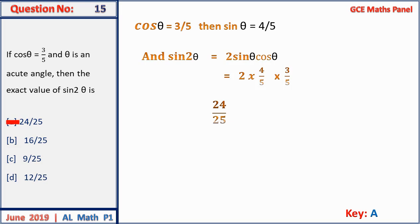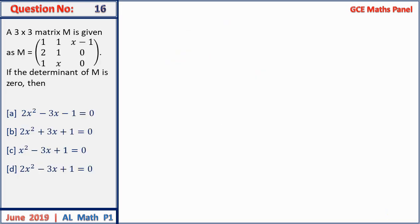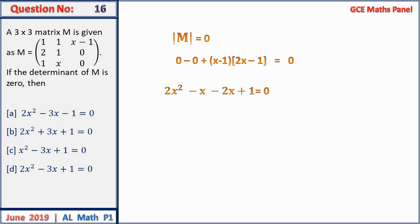Question 16: if the determinant of the matrix is 0, find x. Expanding along the first row: the first two cofactors give 0, and the third gives (x − 1)(2x − 1) = 0. Expanding: 2x² − x − 2x + 1 = 0, i.e., 2x² − 3x + 1 = 0. The answer is D.